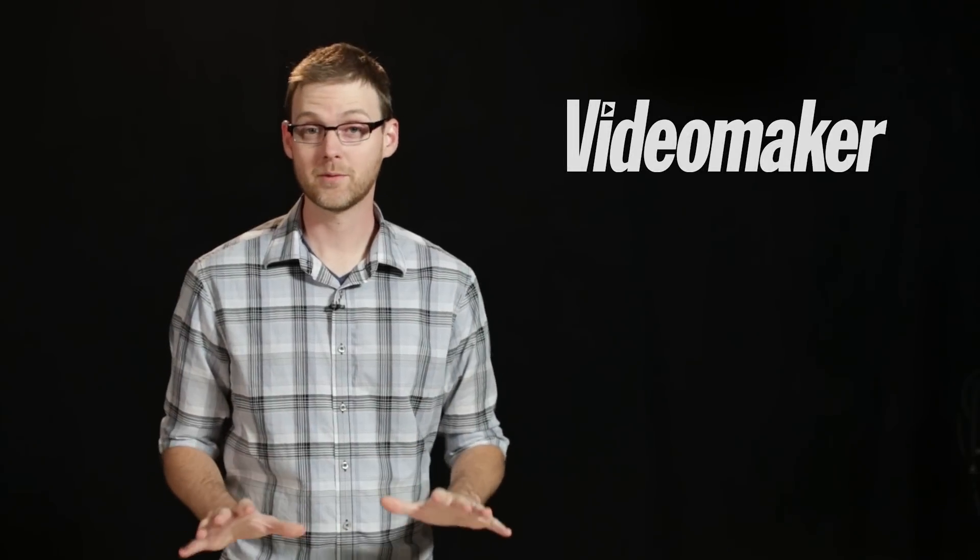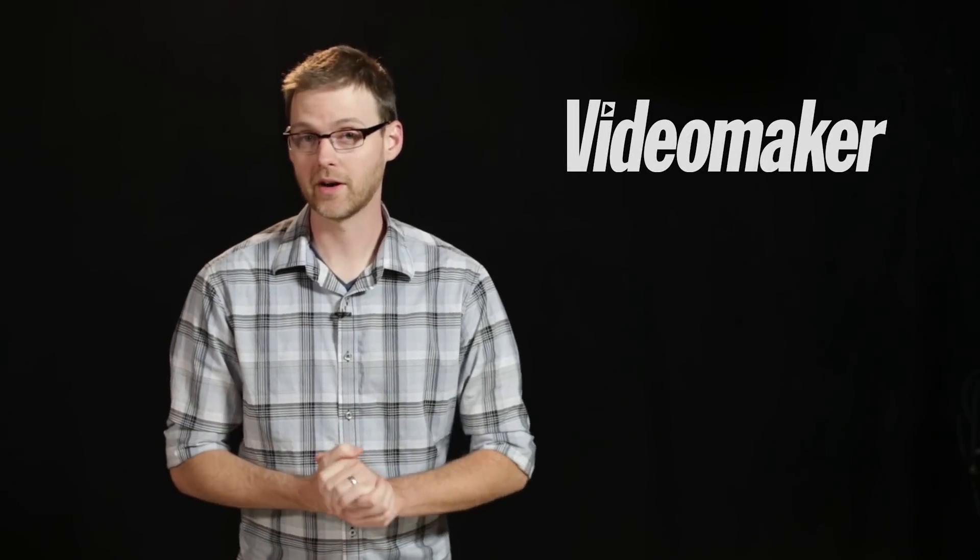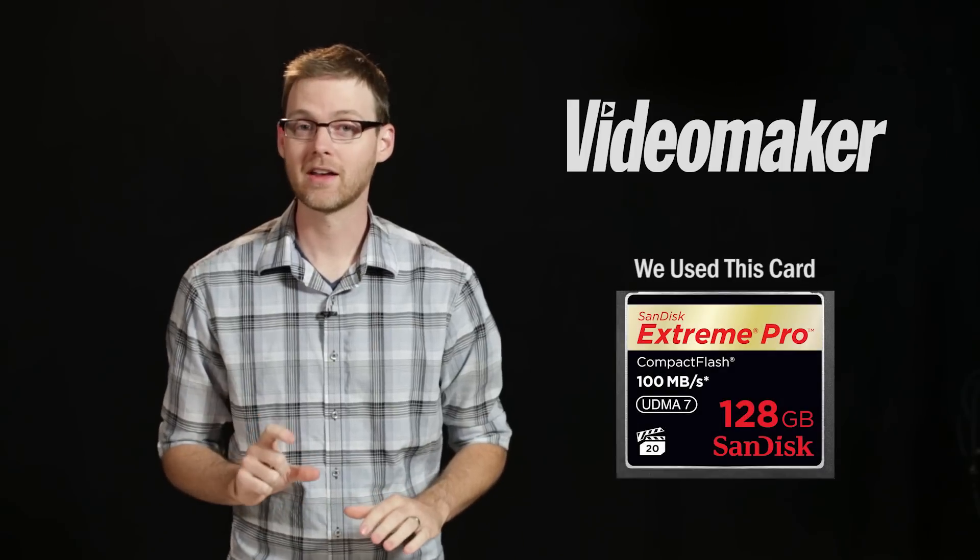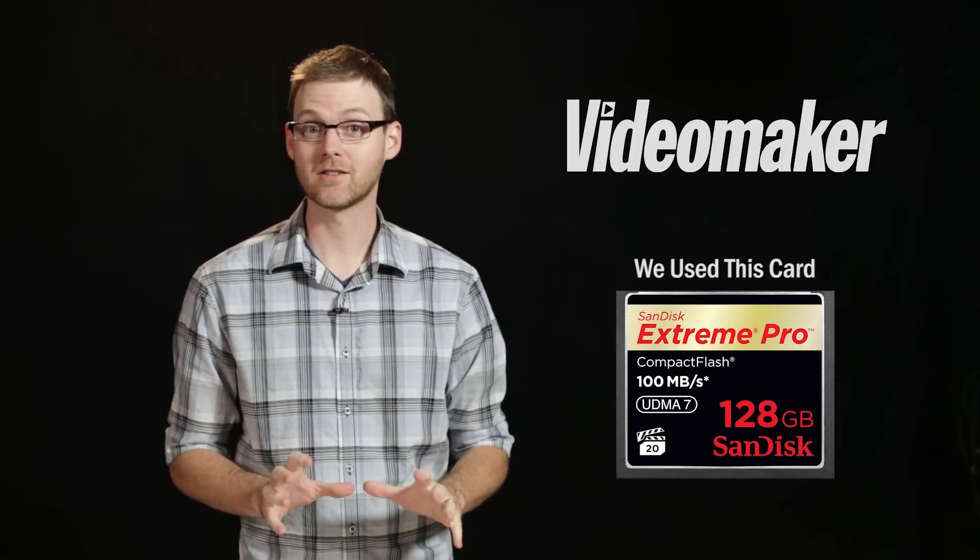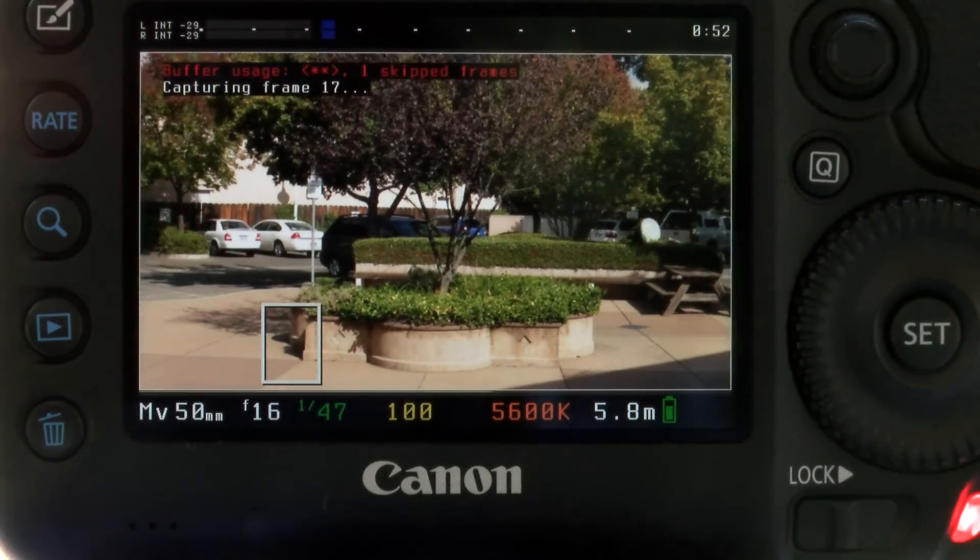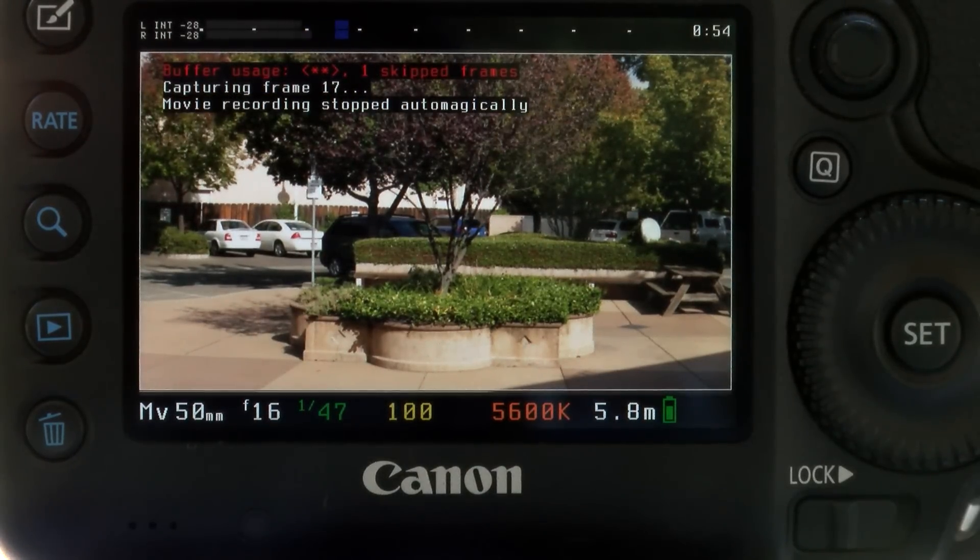The big feature obviously is the ability to record uncompressed raw footage on your Canon DSLR. Now there are some drawbacks to this. One that we found is that even though we had a pretty fast CompactFlash card, we did get some frame drops when recording at 1080p, so we had to drop it down to 720p in order to get full frame video.